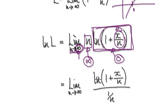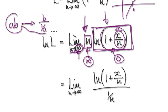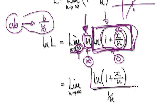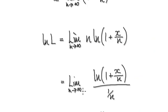When you have an indeterminate form and you have a product — one thing multiplying another — our trick is to rewrite a·b as b divided by (1/a). We've always used this trick. So rewrite this block as the natural log expression divided by 1/n.